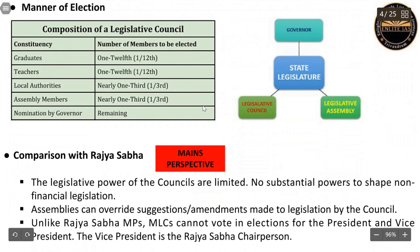Regarding the composition: one-twelfth of the members come from graduates, one-twelfth from teachers, one-third from local bodies, one-third by the assembly members, and the remaining are nominated by the Governor of the state. From the mains perspective, we now compare the Legislative Council with the Rajya Sabha.